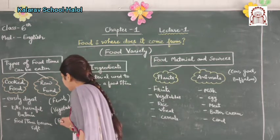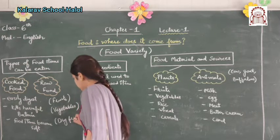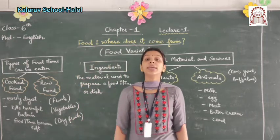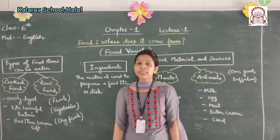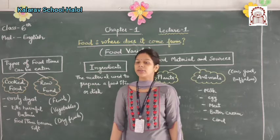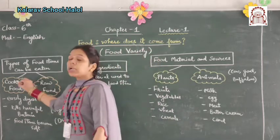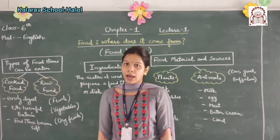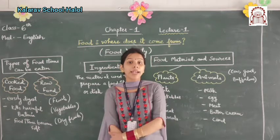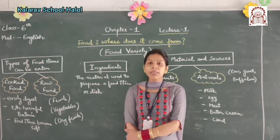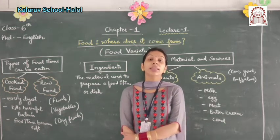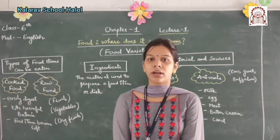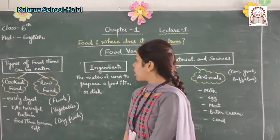Third are dried fruits — almonds, cashew nuts, etc. Now, the examples of cooked food are wild rice, vegetable curry, dal, chapati, etc.